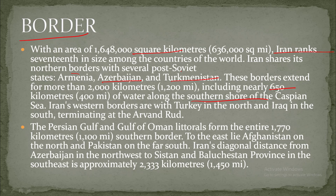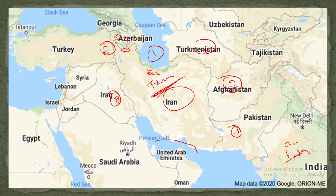Iran's western borders are with Turkey in the north and Iraq in the south, terminating at Arvand Rud. I will show you where Arvand Rud is located — this is the place where Arvand Rud is located.